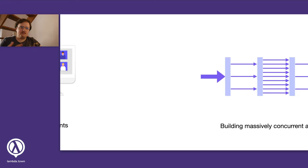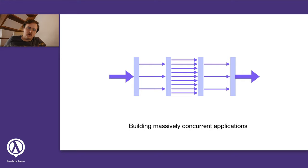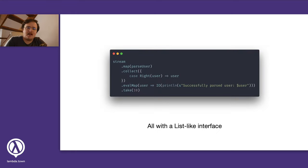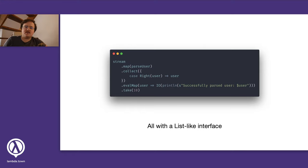Streams also allow you to build massively concurrent applications. You can process elements one by one, or process them concurrently using operators that take advantage of multi-threading. You can also merge multiple streams that will run concurrently, performing multiple pipelines of data transformations at the same time. And all of that can be done with a familiar list-like interface — operators like map, filter, and collect that you already know from working with collections work just the way you'd expect with streams, making streams very easy to pick up.